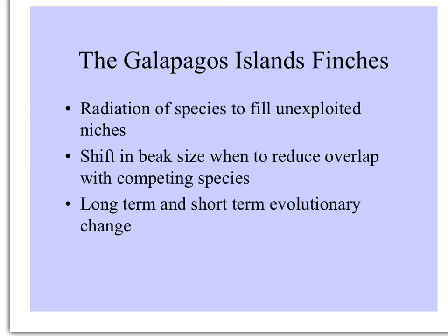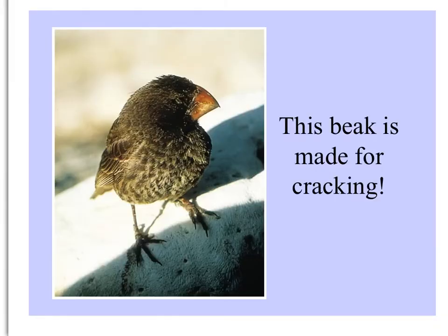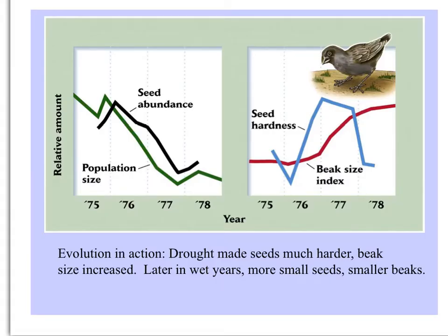The beaks' sizes shifted when the finches were competing with other species, specializing in niches that were less full. There were both short-term and long-term evolutionary changes. Looking at this finch with his broad, strong beak, you can see he is well-suited for cracking seeds. In the late 70s, there was a drying period and the abundance of seeds dropped while hardness increased.